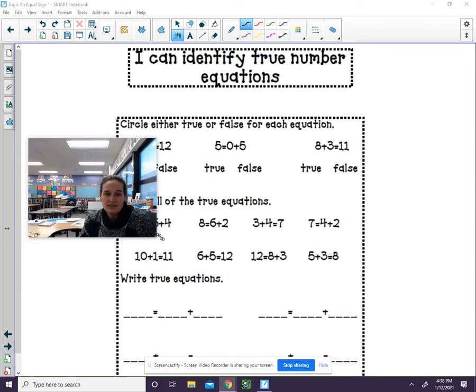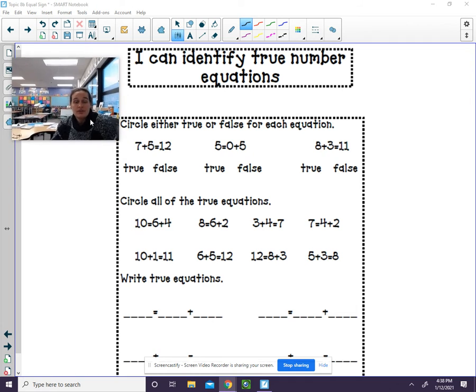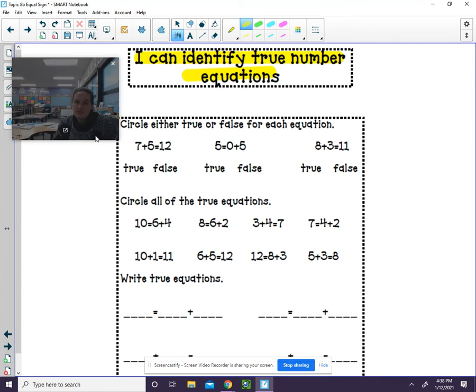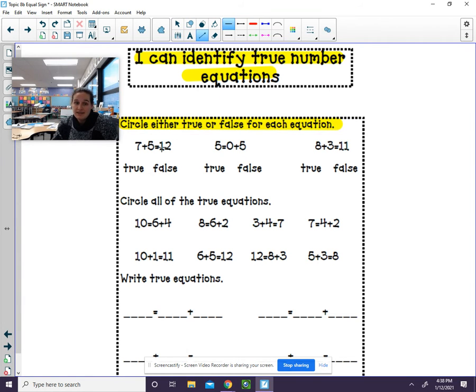Here we have our practice sheet today. Be careful. Like we were doing on the other ones, you need to find where you need to add first. I can identify true number equations. Circle either true or false for each equation. It's very similar to what we've been doing. I am asking that you underline the part that you need to add. It will help you clue in to where that equal sign is so you don't get confused.